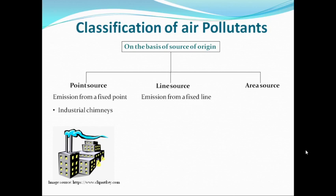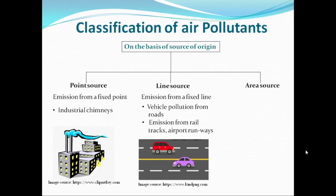The second category is line source air pollutants. When the air pollutants come to the environment from a fixed path or a fixed line, then all such air pollutants are known as line source air pollutants. The example in this category could be vehicular pollution from the roads. Roads and highways are a fixed line or a fixed pathway on which vehicles run from one location to another, and during their movement the pollutants are released into the environment through the exhaust in the form of exhaust gases. So that road or highway can be termed as a line, and all such pollutants are termed as line source air pollutants.